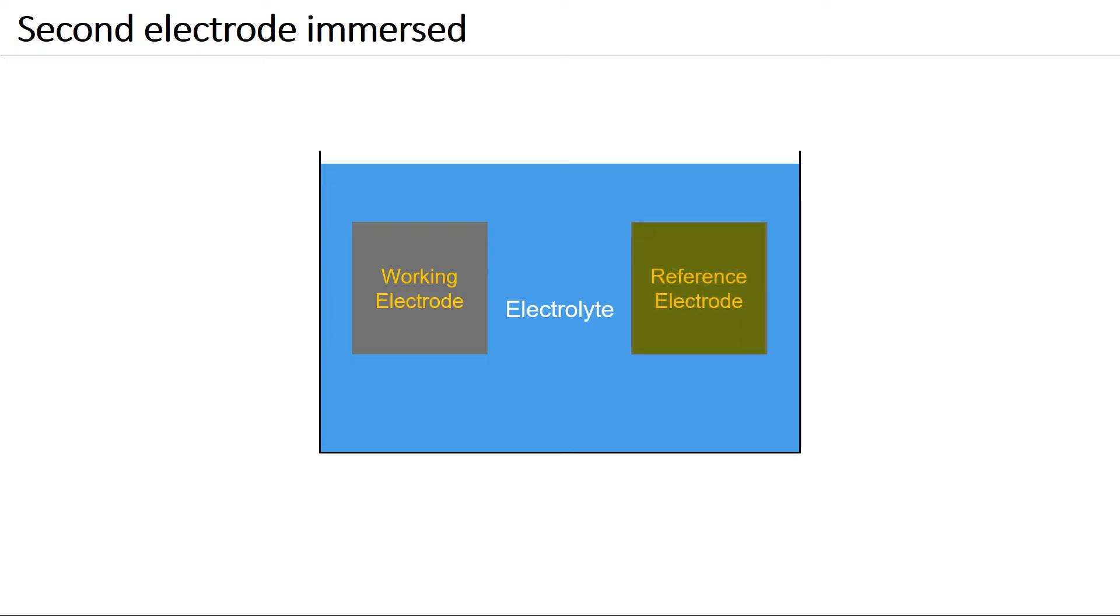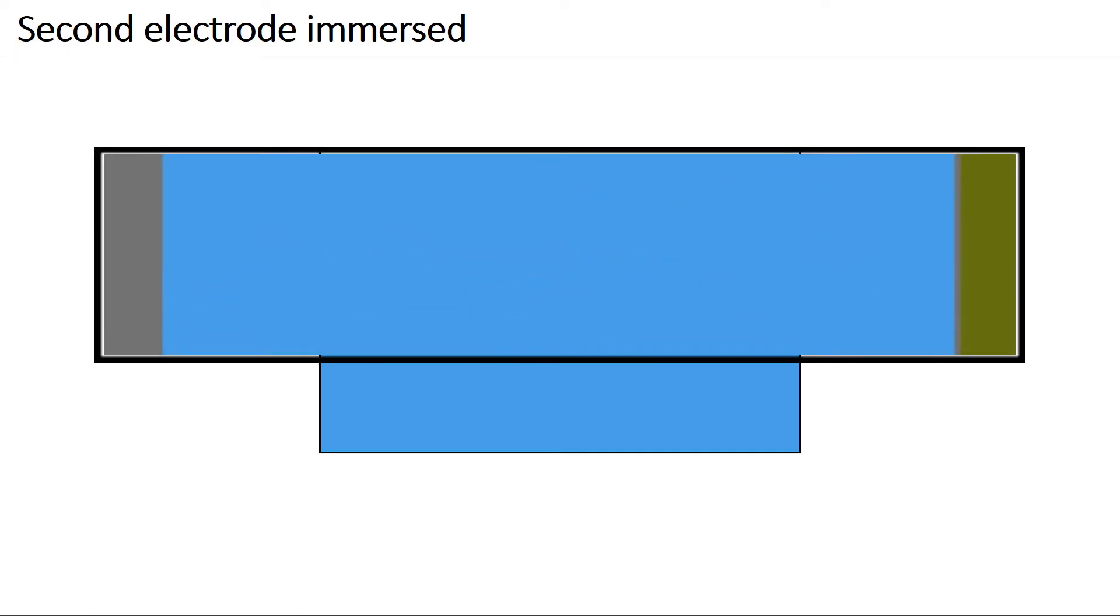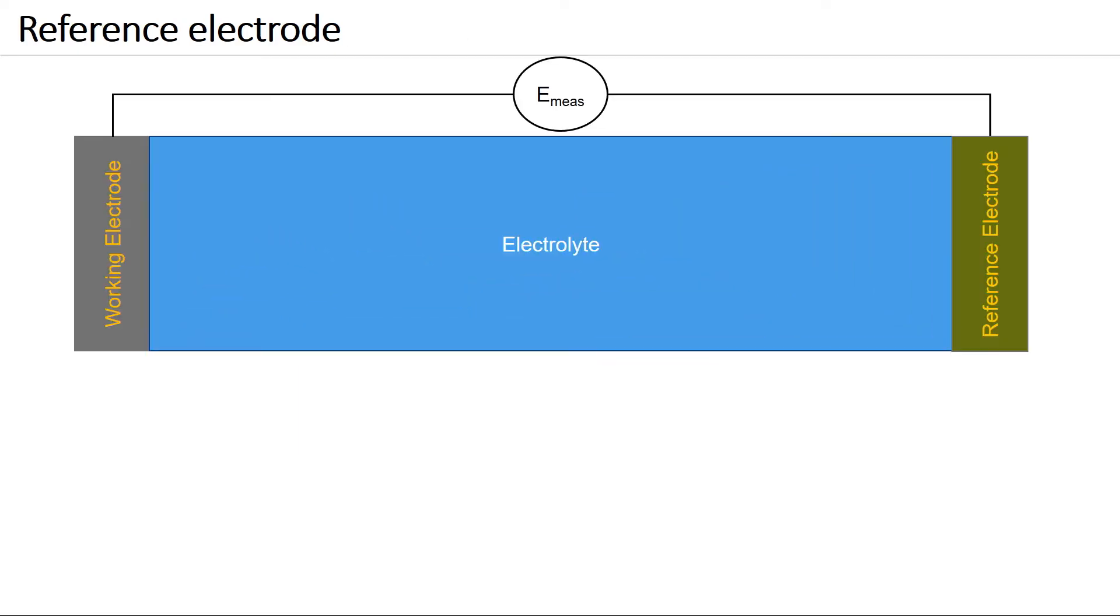Ideally, a so-called reference electrode is used. If immersed in the same electrolyte, the difference of potential between the working electrode and the reference electrode can be measured by connecting a voltmeter to the two electrodes.